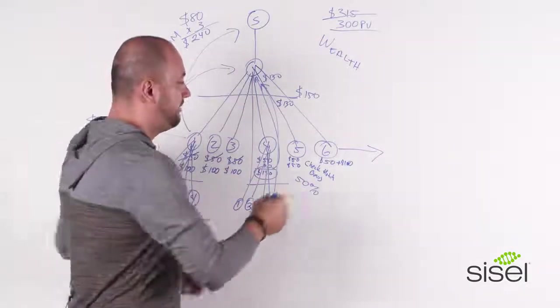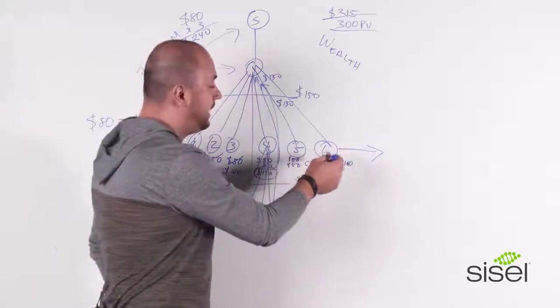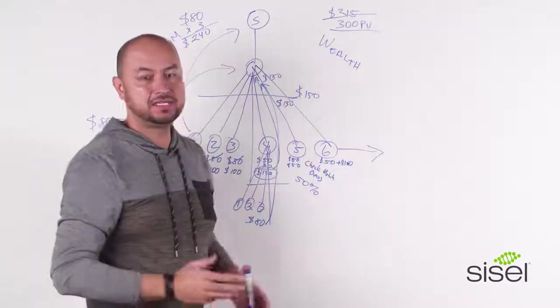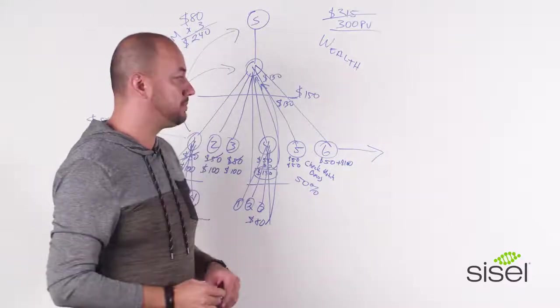So from here on, every time that you sign somebody up, you will be getting $150 from number six, seven, eight, nine, through infinity. It depends on you and how many people you want to sign up directly sponsored.